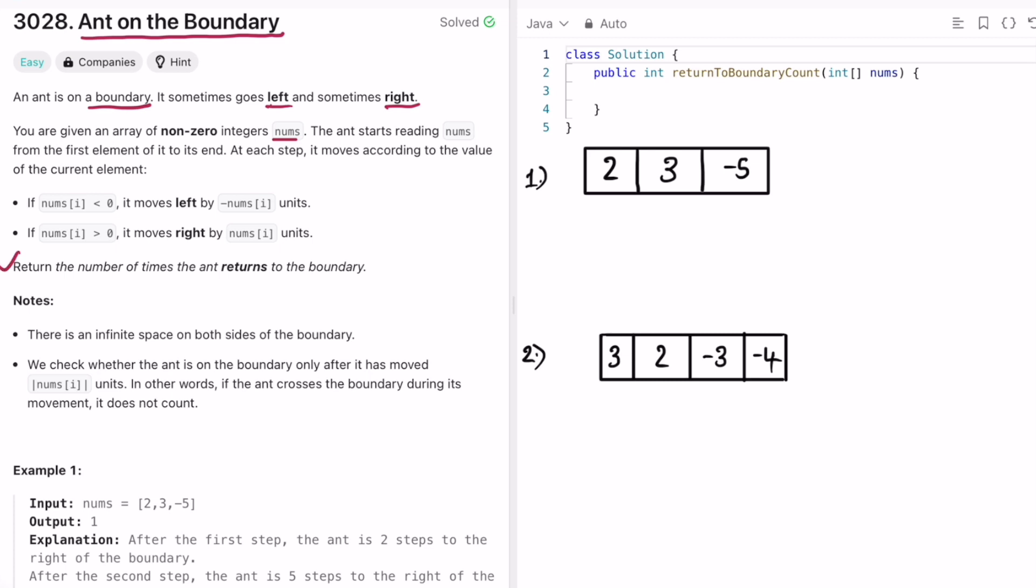Our task is to return the number of times the ant returns to its boundary, and these are the two conditions given. There is infinite number of space on both sides of the boundary. That is the first condition, and we check whether the ant is on the boundary only after it has moved the current elements amount of units.